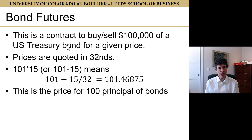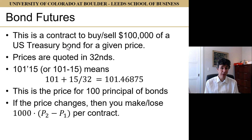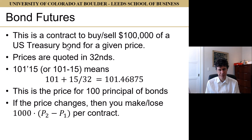This is the price for $100 of principal of the bonds, which means if the price changes, you make or lose 1,000 times the price change. This is if you're long; if you're short, it's just the opposite. So it's 1,000 times (price 2 minus price 1) per contract.